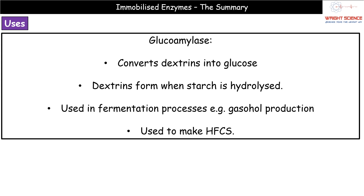Finally, the last example is glucoamylase, which converts dextrins into glucose. Dextrins form when we hydrolyze starch, and this glucose can be used in producing HFCS — high fructose corn syrup. Glucoamylase can also be used in the production of gasohol, which is one of the more environmentally friendly fermentation products that we can use to power vehicles such as cars.